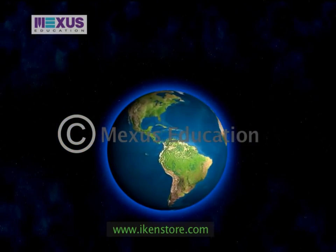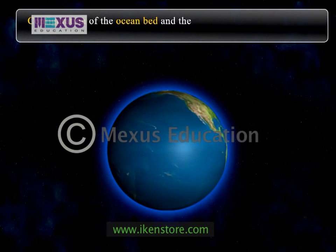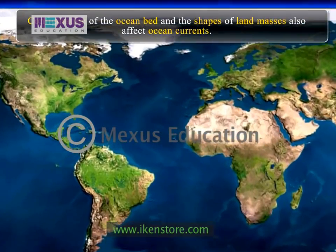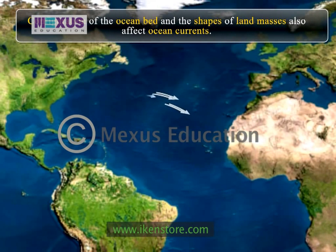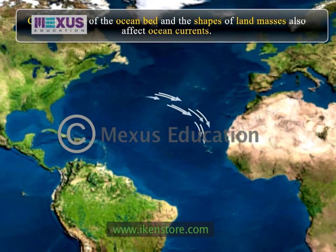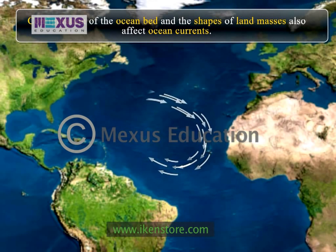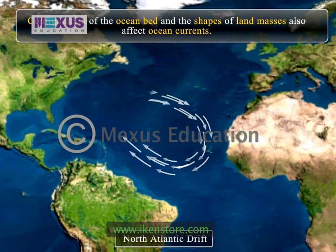Other factors affecting currents are the configuration of the ocean bed and the shapes of land masses. For example, in the Atlantic Ocean the north equatorial current flows towards the West Indies, where most of the current is channeled into the Gulf of Mexico. It then bears north-eastward, bursting into the Atlantic Ocean between Florida and Cuba as the Gulf Stream. Once it leaves the American coast, this current is known as the North Atlantic Drift.